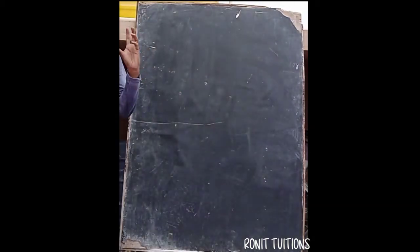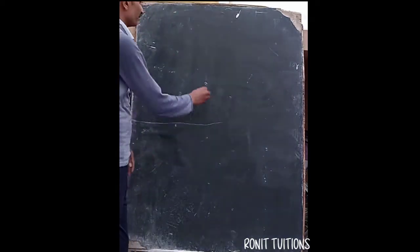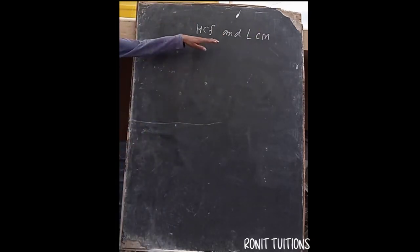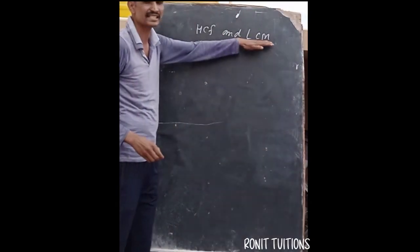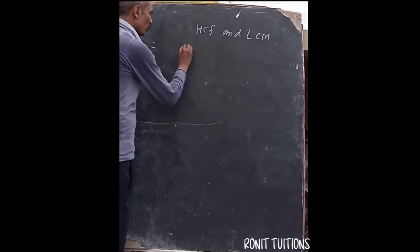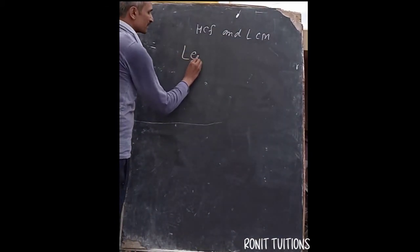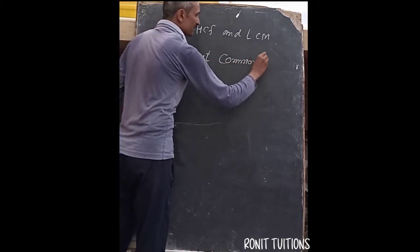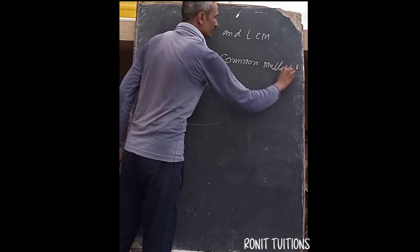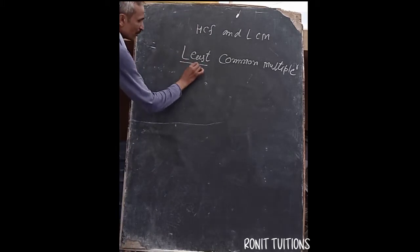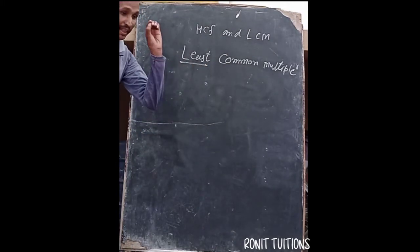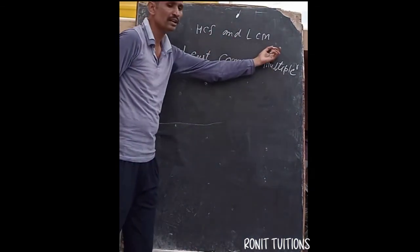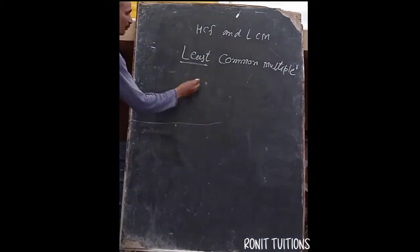We already read about HCF, and today we are going to learn what is LCM. The full form of LCM is: L stands for Least, C stands for Common, and M stands for Multiple. The Least Common Multiple is the minimum number that appears as a multiple of the given numbers.